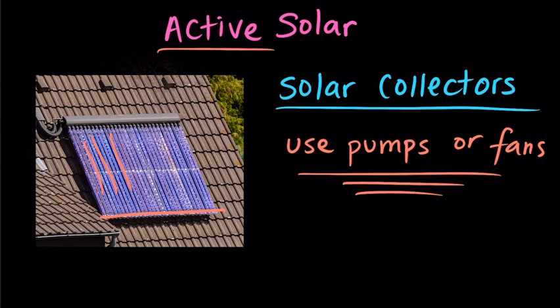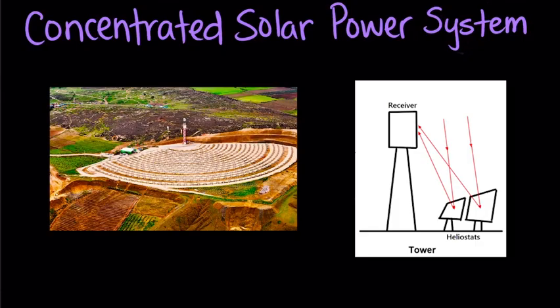A different alternative, if you happen to have a very large area of space, is a concentrated solar power system, or CSP for short, which is basically a lot of reflectors that concentrate that solar energy.